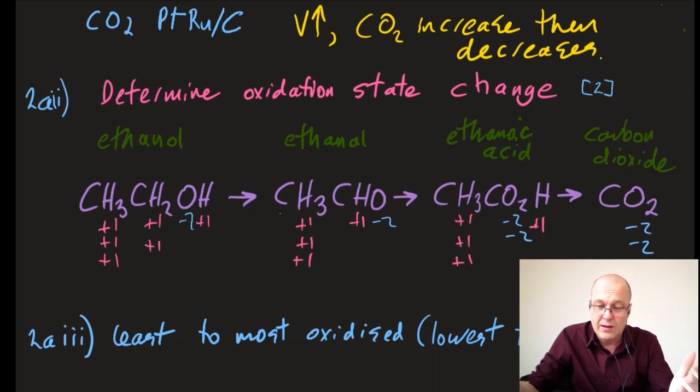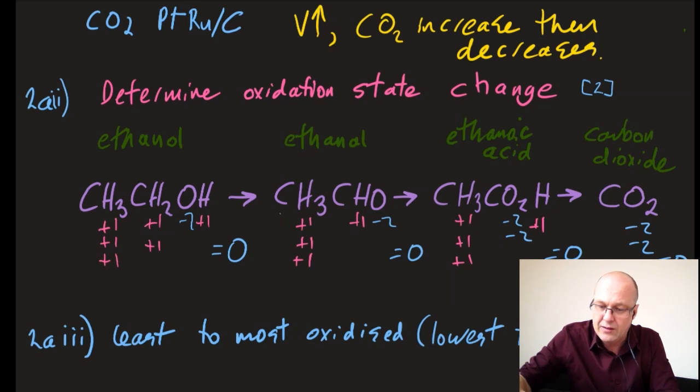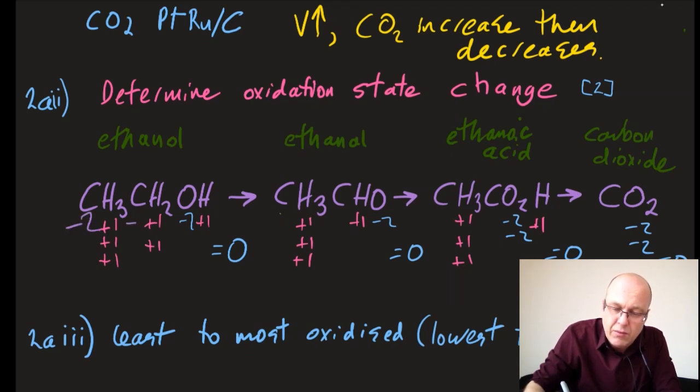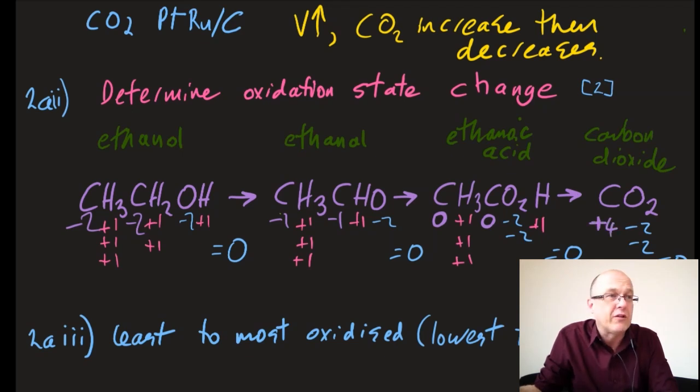I'm just going to fill these in. Following another oxidation state rule, the sum of the oxidation states equals the charge on the molecule or ion, so they're all going to equal zero. Each of these four are uncharged. Let me work out what the carbon is. That has to be -2, -2, -1, -1. This feels weird but it's possible to have a zero oxidation state in a molecule. And that's going to be +4.